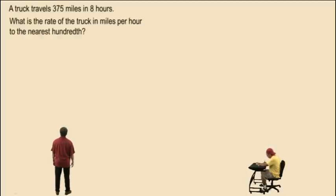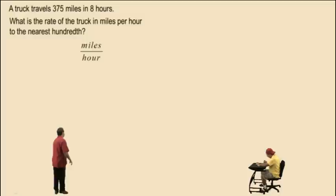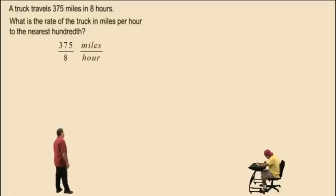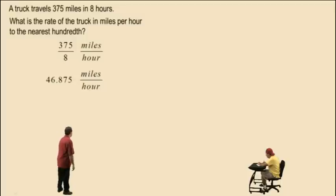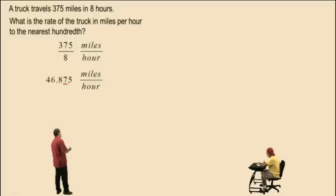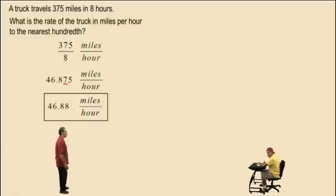A truck travels 375 miles in eight hours. What is the rate of the truck in miles per hour to the nearest hundredth? So we put 375 miles over 8 hours. Get your calculator ready, Charlie. 375 divided by 8 is 46.875. That's miles over hour. We need to round to the nearest hundredth — the 7 is in the hundredths place. We look to the next digit to the right; it's a 5, so we add one to the 7, making it 8. Our final answer is 46.88 miles per hour.